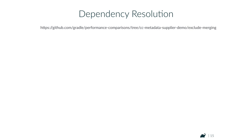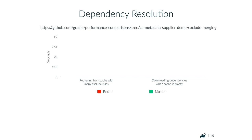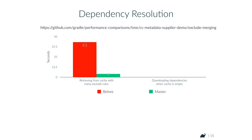Dependency resolution is one area we are working on. We had inefficiencies when applying many exclude rules to dependency management in Gradle. With Gradle 3.4 it takes 43 seconds just to build the dependency graph even if all dependencies are in your local cache. With Gradle master, it now takes 4 seconds. If you have no exclude rules you'll see zero improvement; if you have a lot of them, it will be much faster.